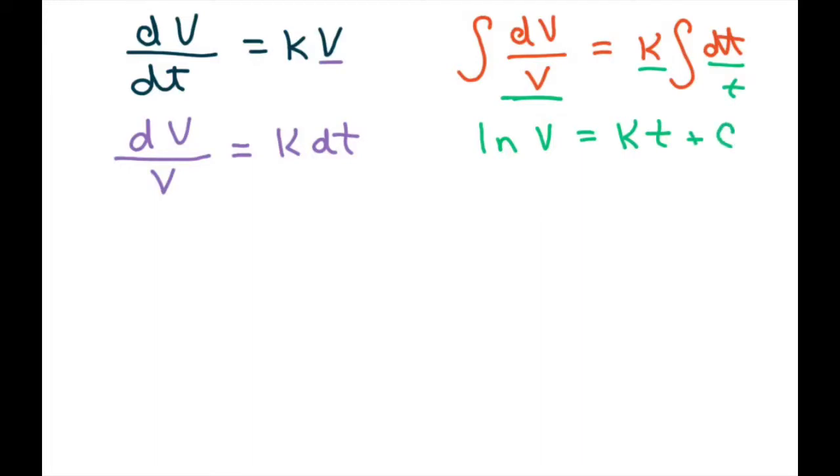Now, it's traditional to put the equation in terms of v instead of ln of v. And so we're going to exponentiate both sides to get base e. So what you're going to do is write this as v equals e to the kt plus c.